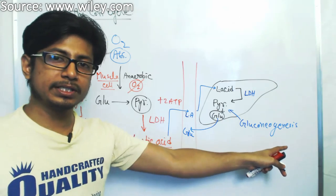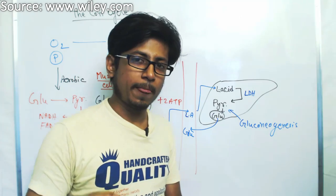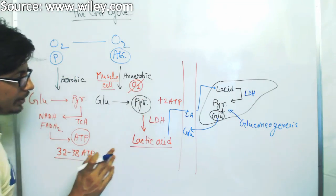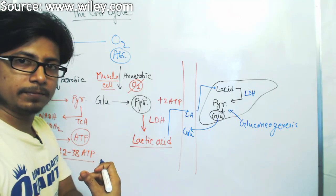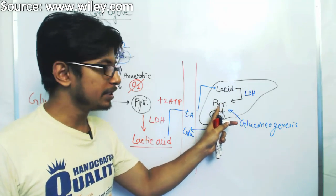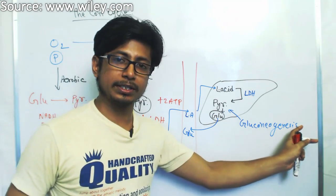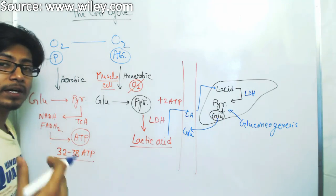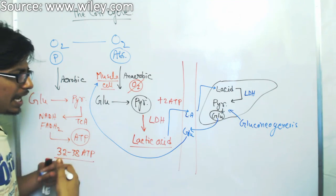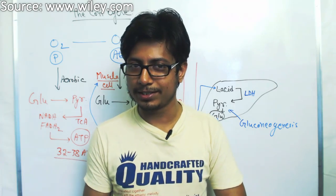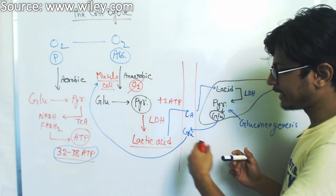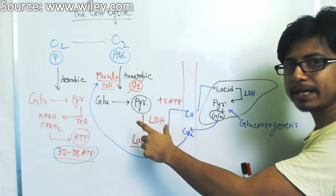If you want to know the details about gluconeogenesis and the steps of converting pyruvate into glucose, I recommend you watch my video on gluconeogenesis in the same series. The whole idea is: whenever lactic acid builds up in the muscle, it is taken into the blood, the blood circulates it to the liver, the liver converts lactic acid to pyruvate, then pyruvate goes through gluconeogenesis to produce glucose, and the glucose is then transported back through the bloodstream to the muscle cells.